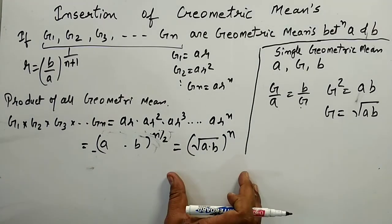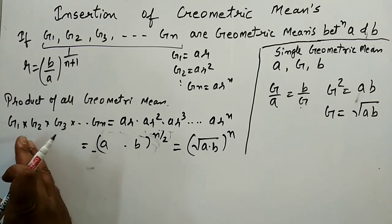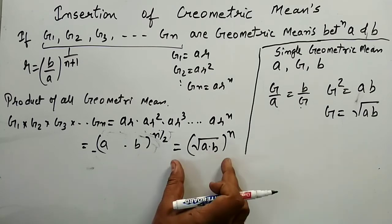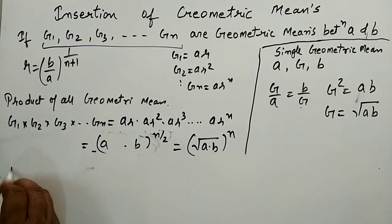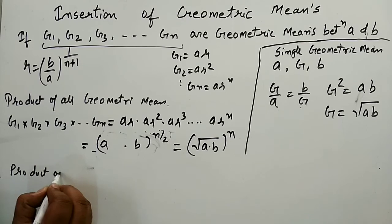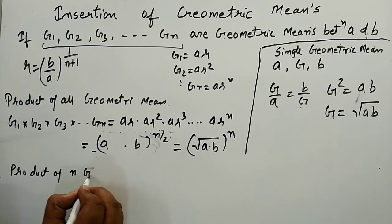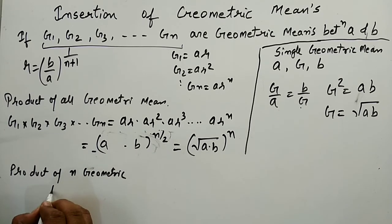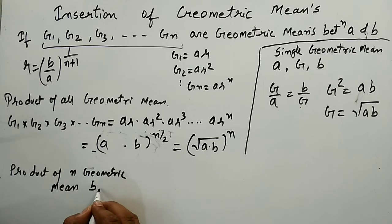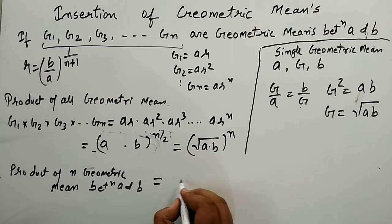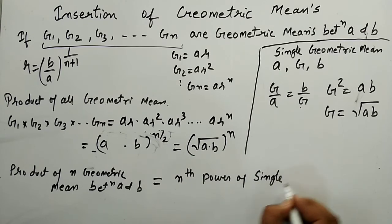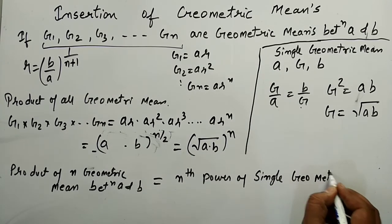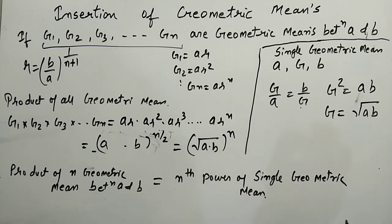So the conclusion is: the product of all n geometric means between a and b equals the nth power of the single geometric mean between a and b. And the single geometric mean is the square root of ab.